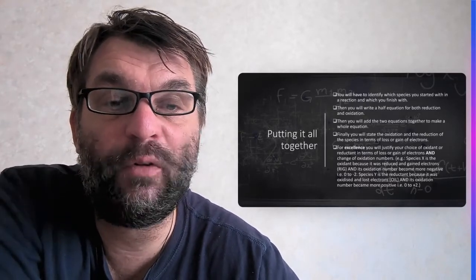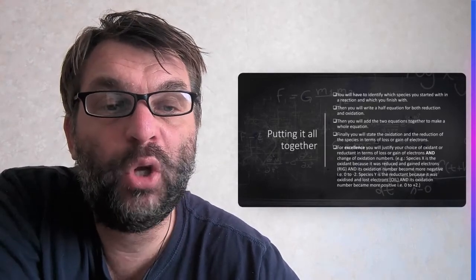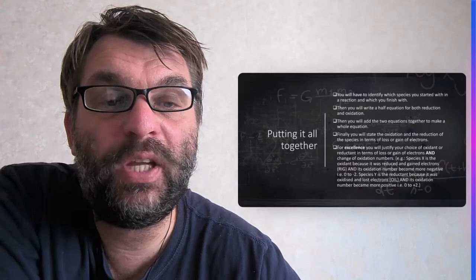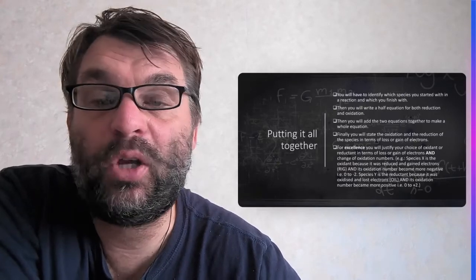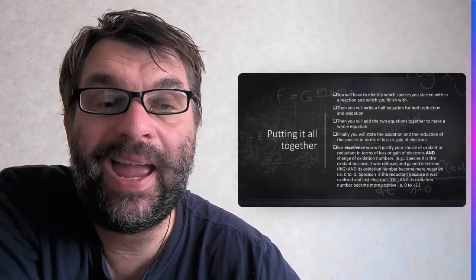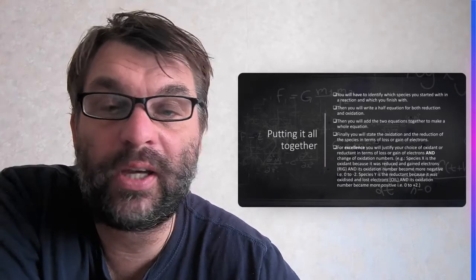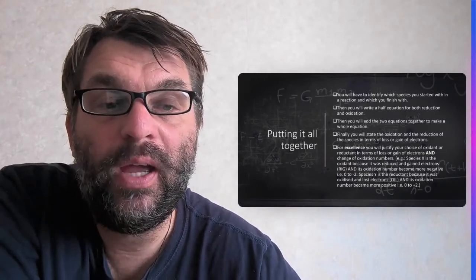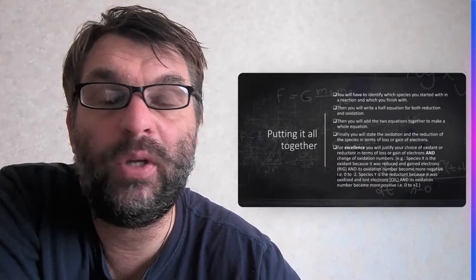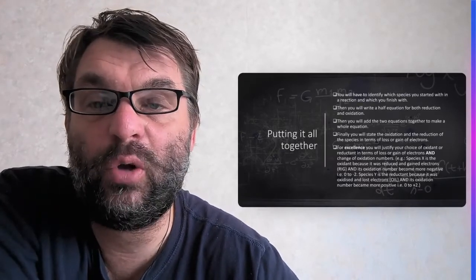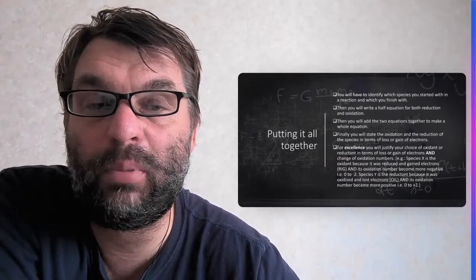For example, here we have a reaction between species X and species Y. You'll state, for example, species X is an oxidant because it was reduced and gained electrons, because reduction is gain of electrons and its oxidation number has become more negative, saying it's gone from oxidation number of zero to minus two.